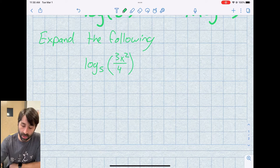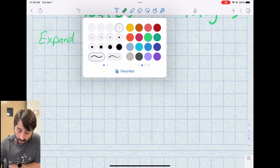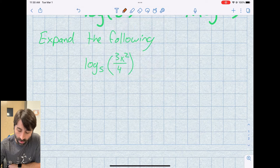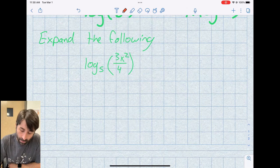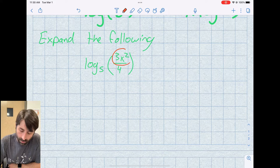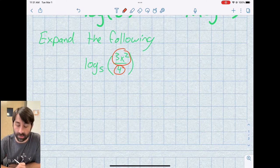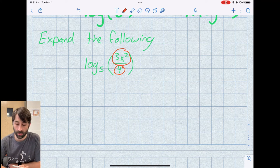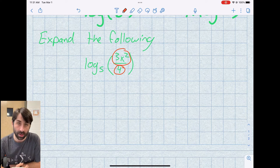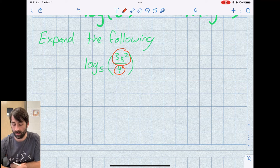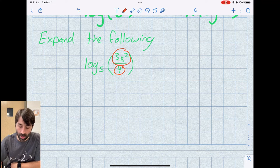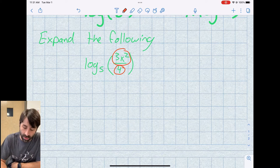Up here in the numerator of this argument, I've got a product. I have three times x squared. And here I have a divisor of four. So I find the sum of the logs of the products, and I subtract the divisors. So let's first start out with that. If I expand this out...